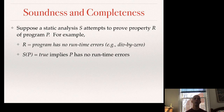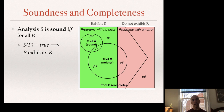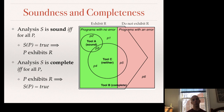A bit about terminology: a static analysis can be either sound or complete. Say the property R is 'the program has no runtime errors.' An analysis is sound if when it says the property holds, it does — S(P) is true implies P exhibits property R. An analysis is complete if when a program exhibits that property, the static analysis says that it does. Obviously we'd like an analysis that is both sound and complete, but let's look at examples of one or the other.